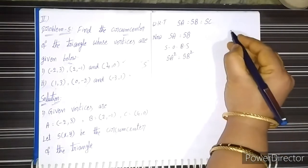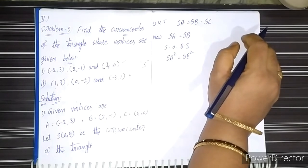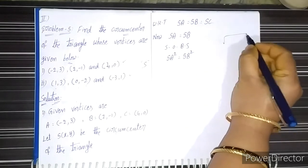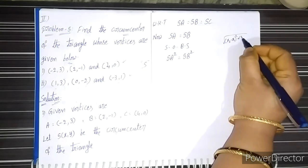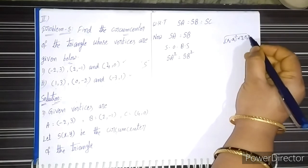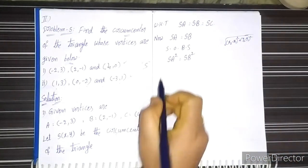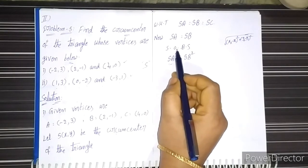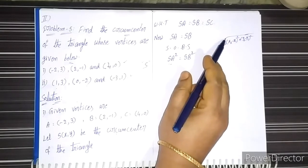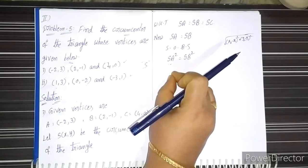For any two points (x₁, y₁) and (x₂, y₂), the distance formula is: square root of (x₂ - x₁)² + (y₂ - y₁)². This is the distance formula. We apply this here, and since we are squaring both sides, the square root gets cancelled, then the substituted value is obtained.